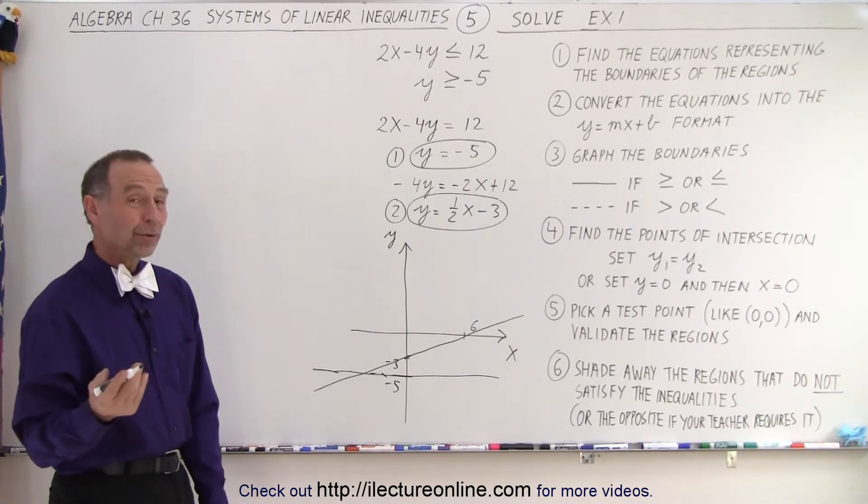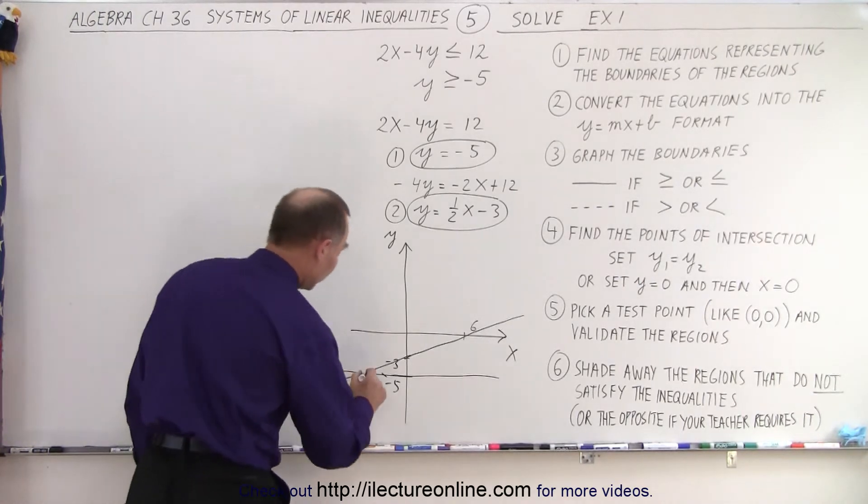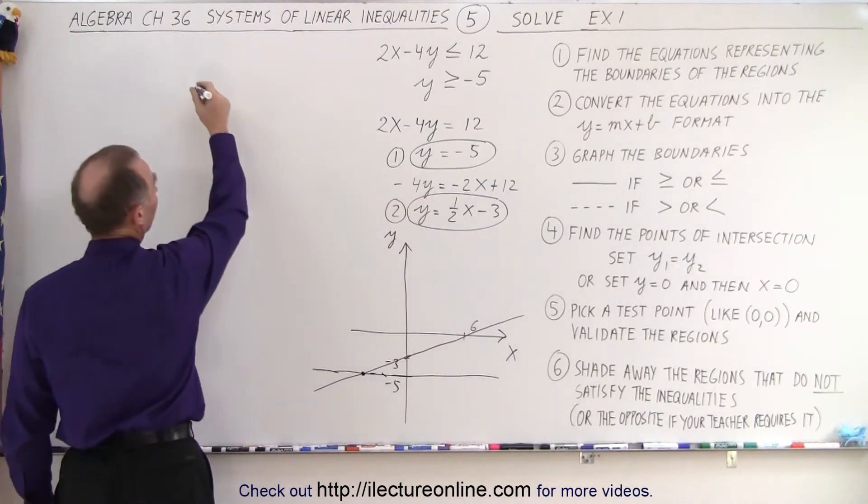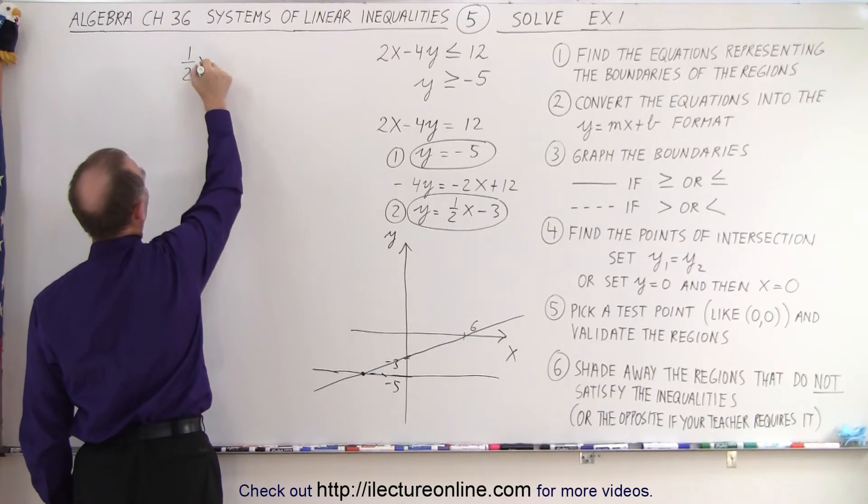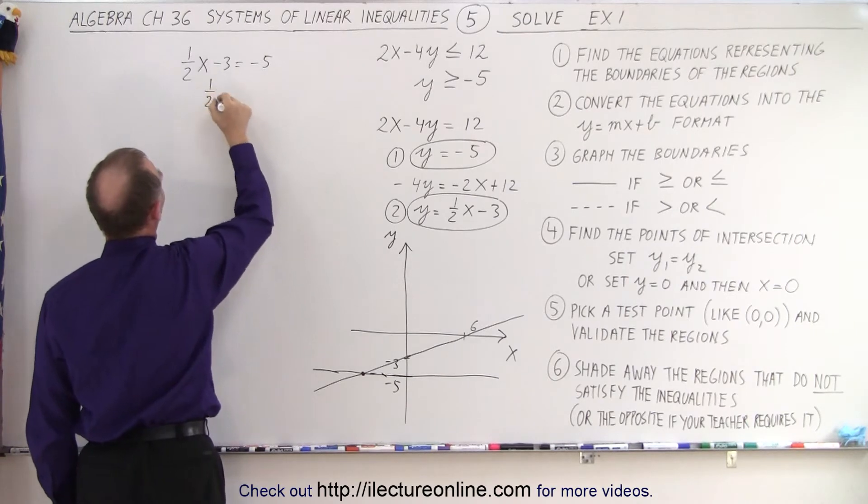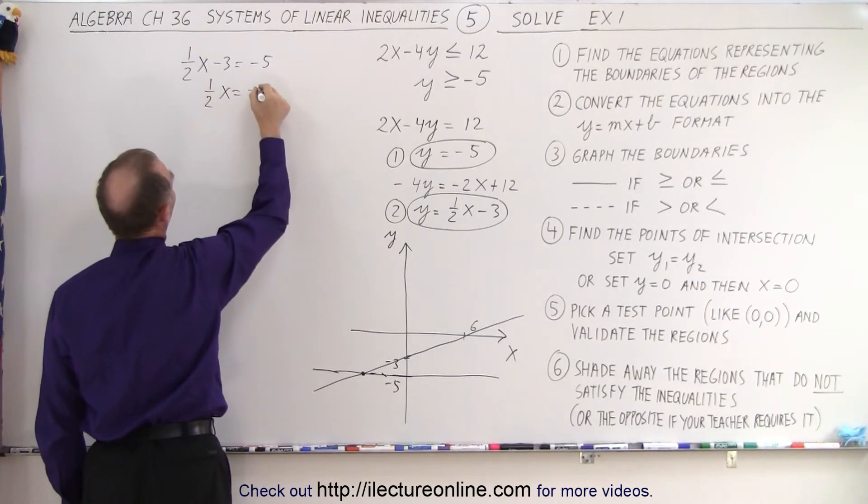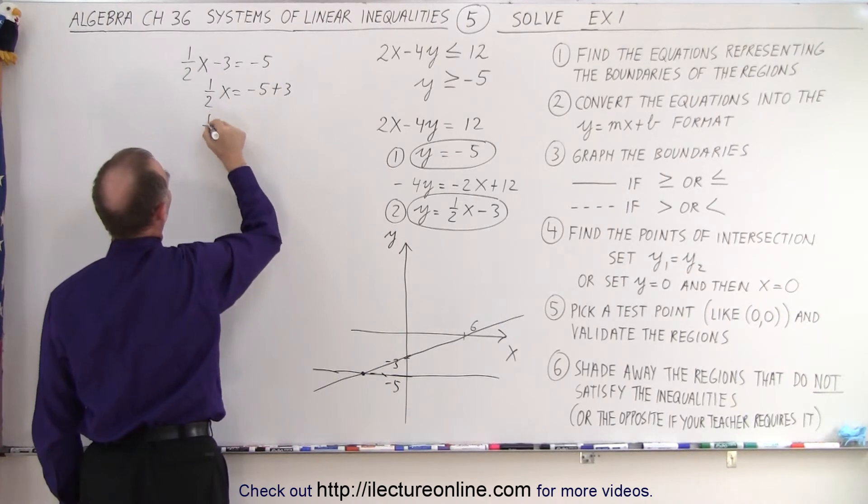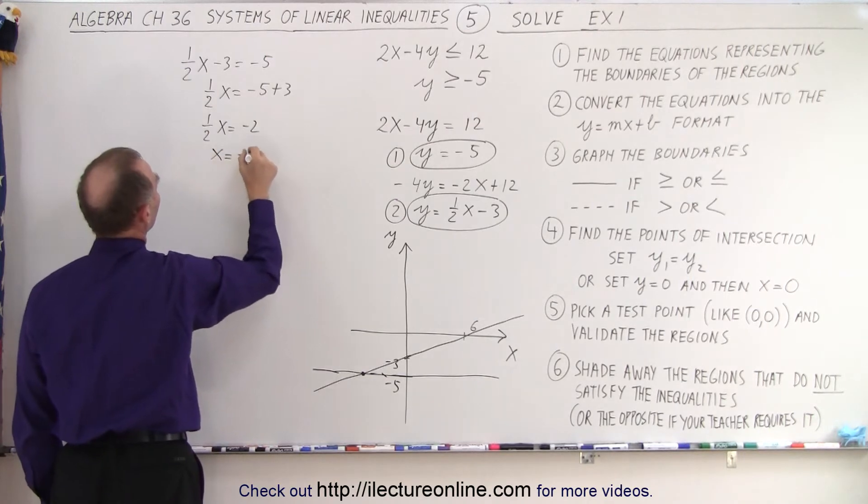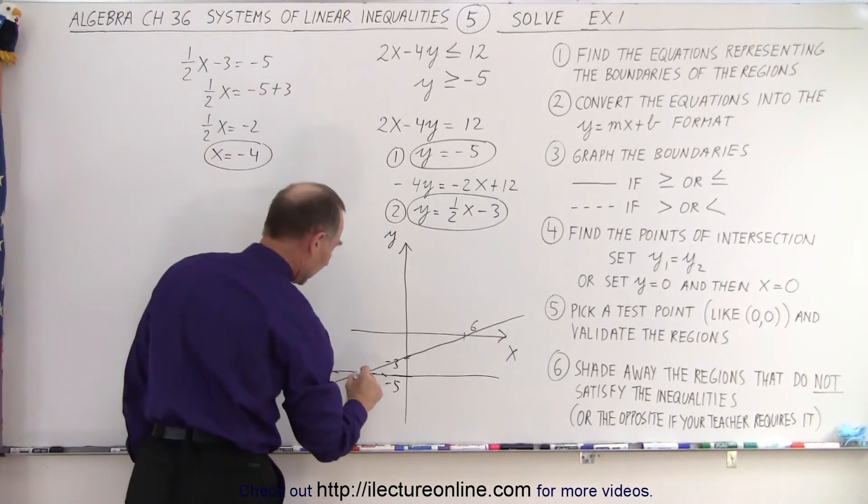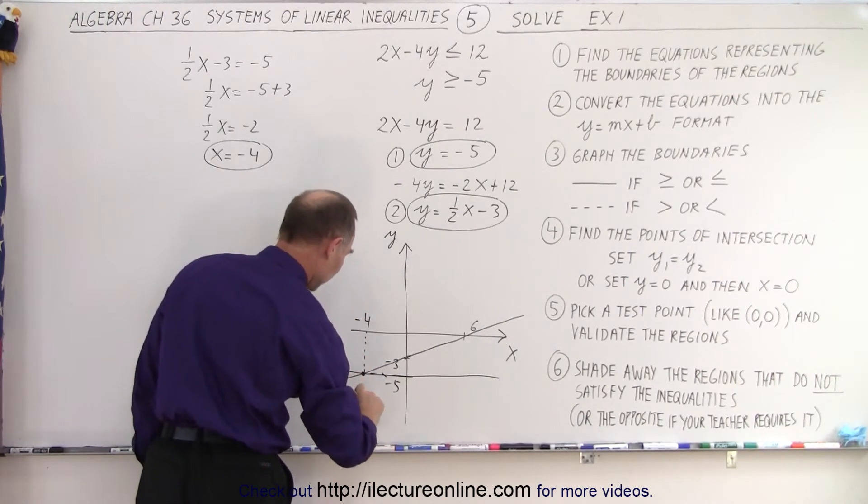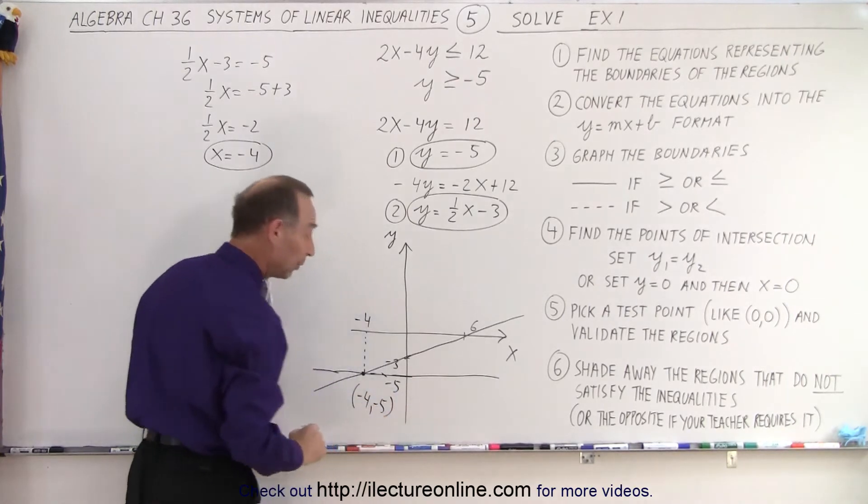Let's see here. We want to know the points of intersection. Well, it's not a bad idea to find them, so we know what this is equal to. And to do that, we set the two y's equal to each other, so we end up with 1 half x minus 3 equals minus 5. So move the negative 3 across. 1 half x equals negative 5 plus 3, or 1 half x equals negative 2, and then we multiply both sides by 2. We get x equals negative 4. So when x equals negative 4, and y equals negative 5, negative 4 like that, so the point is negative 4 comma negative 5 is the point where the two lines cross.